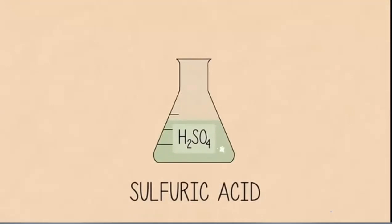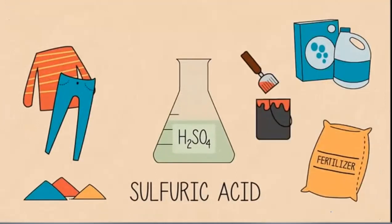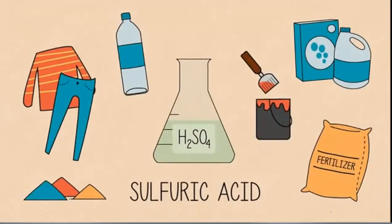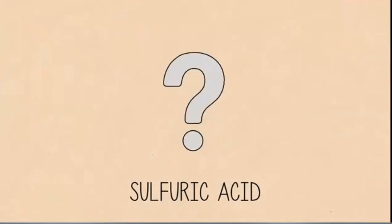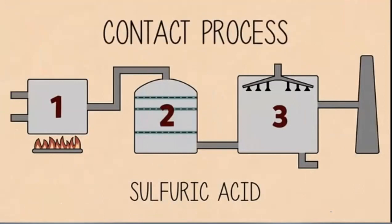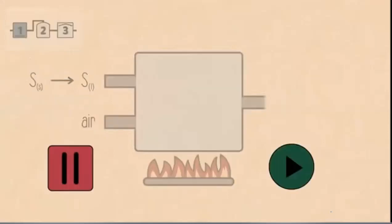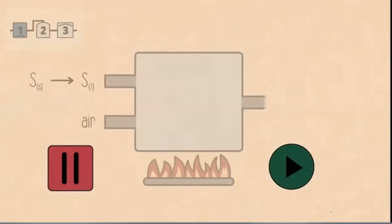Sulfuric acid is a very valuable chemical. It is used in the manufacture of detergents, dyes, fabrics, fertilizers, paints and plastics, and many other products. But how is sulfuric acid made? Sulfuric acid is made in a three-stage process called the contact process. In stage one, sulfur is obtained in its elemental form as a solid, it is melted, and is then combusted in oxygen. The product formed at this stage is sulfur dioxide, and the chemical equation is S + O₂ → SO₂.